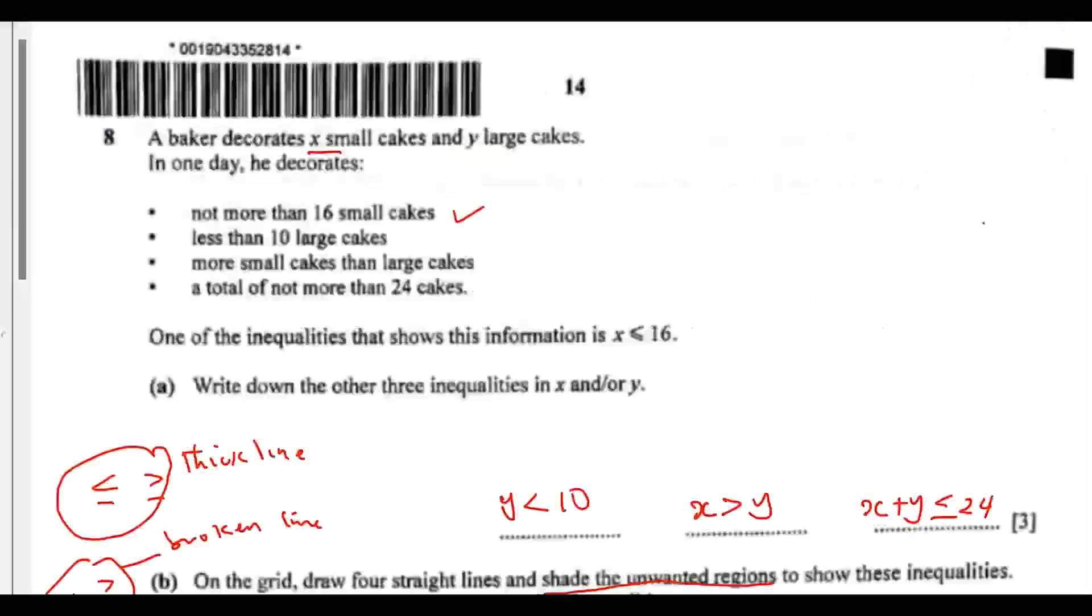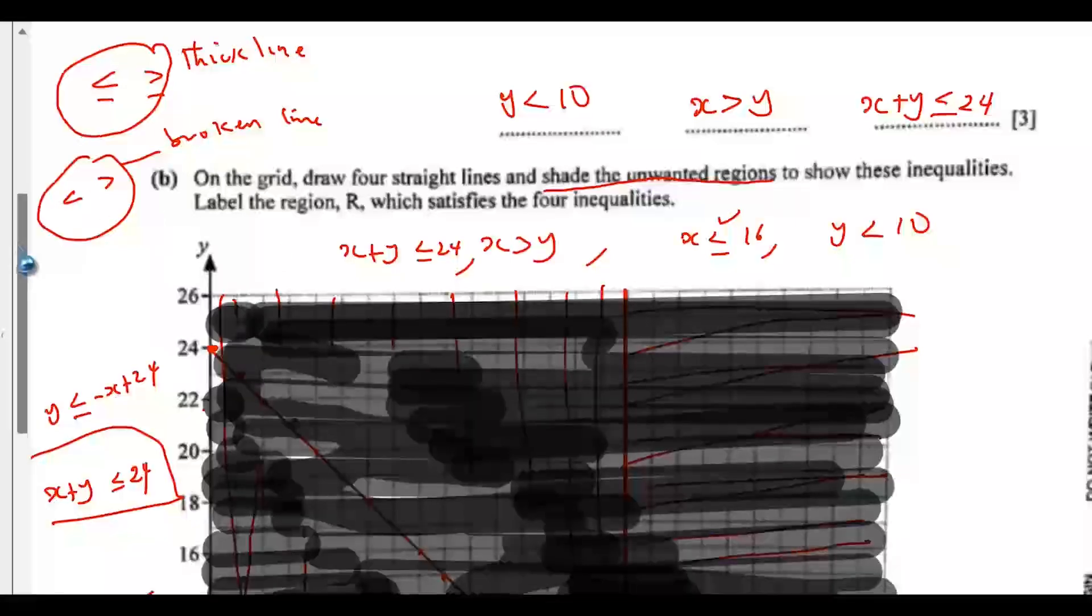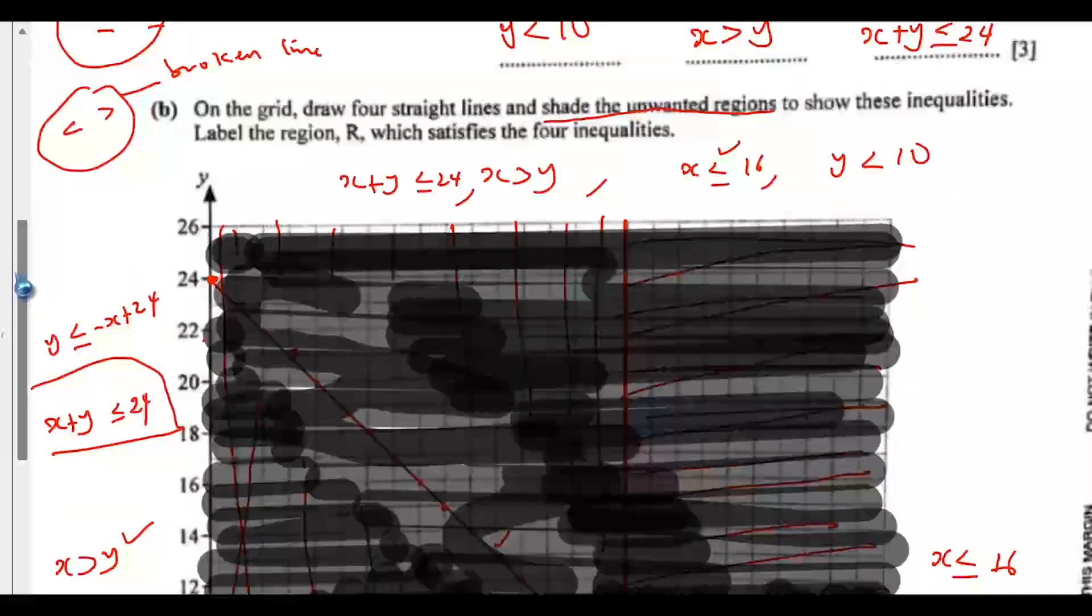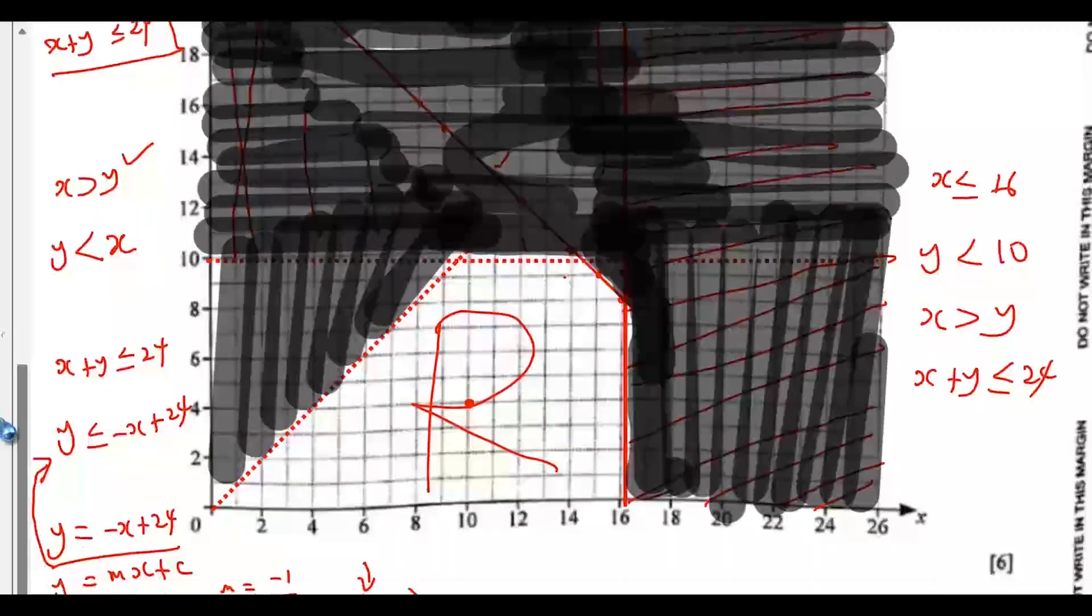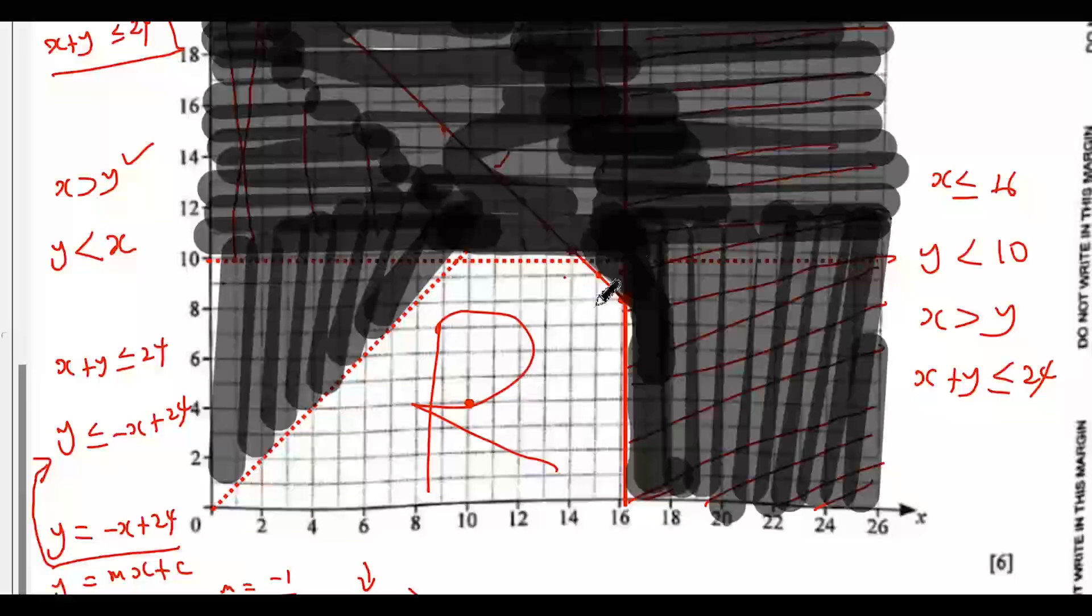So let's go back to the previous page. This was my solution to question 8a. We were given this information and were asked to write the remaining three inequalities. After that, we were asked to draw these inequalities on the grid and mark the region R. So question 8c is meant for this labeled region R.